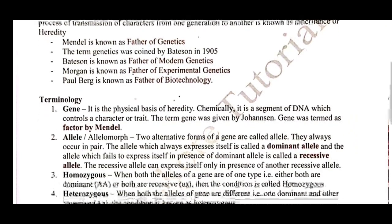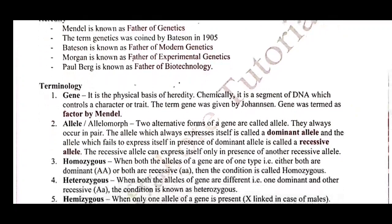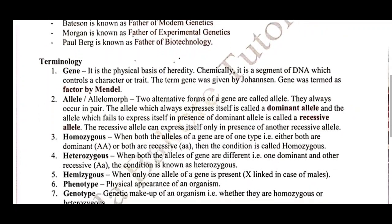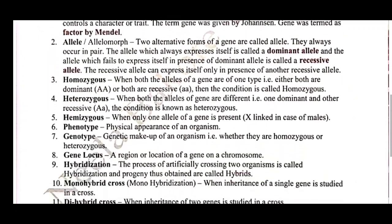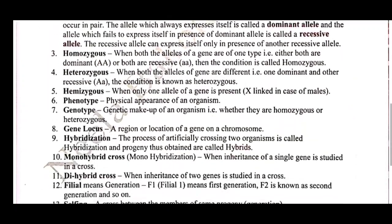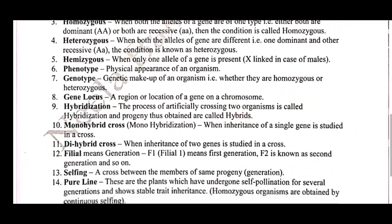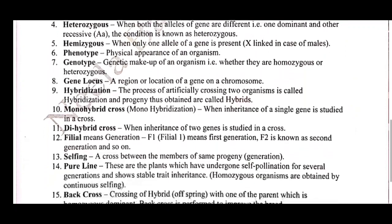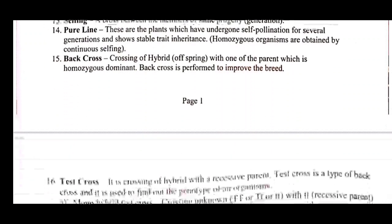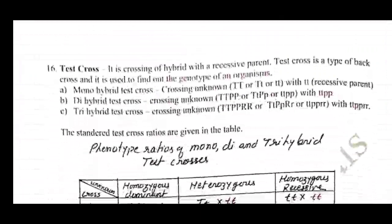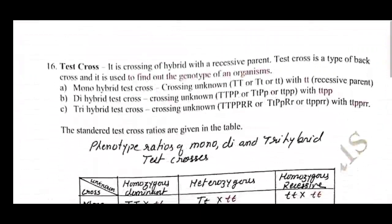In the Terminology section, what is a gene, what is an allele, homozygous, heterozygous, hemizygous, phenotype, genotype, gene locus, hybridization, monohybrid cross, dihybrid cross, filial generations, selfing, pure line, back cross, as well as test cross — all are discussed.